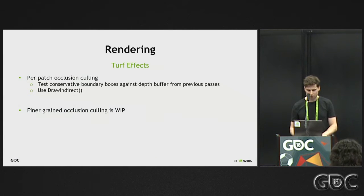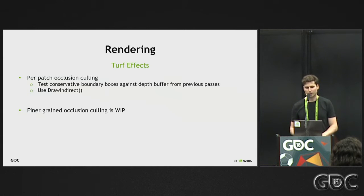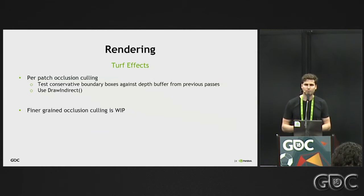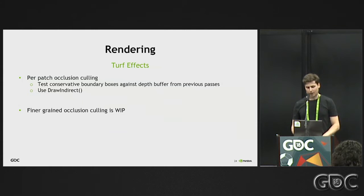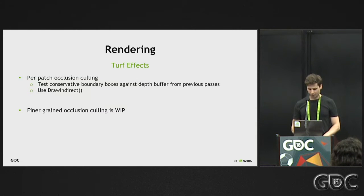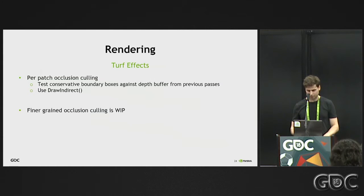Turf FX is not just rendering and shading — we also have good techniques to optimize performance. We use per-patch occlusion culling. The way it works, you provide any depth buffer constructed from previously rendered geometry, and we take it as input and test conservative bounding boxes for each turf patch. If it's visible, we draw it with indirect draw; if not, it's trivially skipped on the GPU. We're also thinking about adding finer-grained occlusion culling, possibly down to each individual grass blade, but this is still work in progress and could appear in future releases.